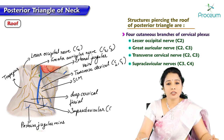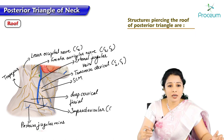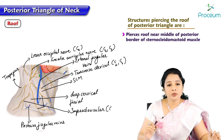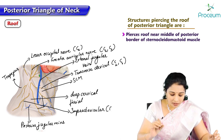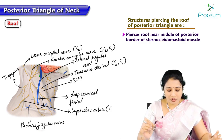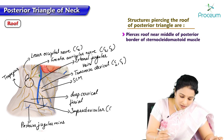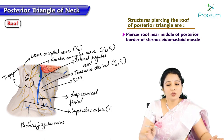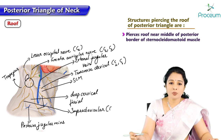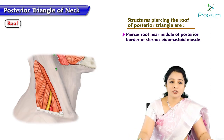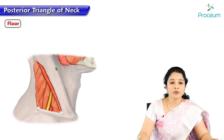All these cutaneous nerves pierce the roof almost near the posterior border of sternocleidomastoid — somewhere in the middle of the posterior border — and at this point most cutaneous nerves pierce the roof and become superficial.